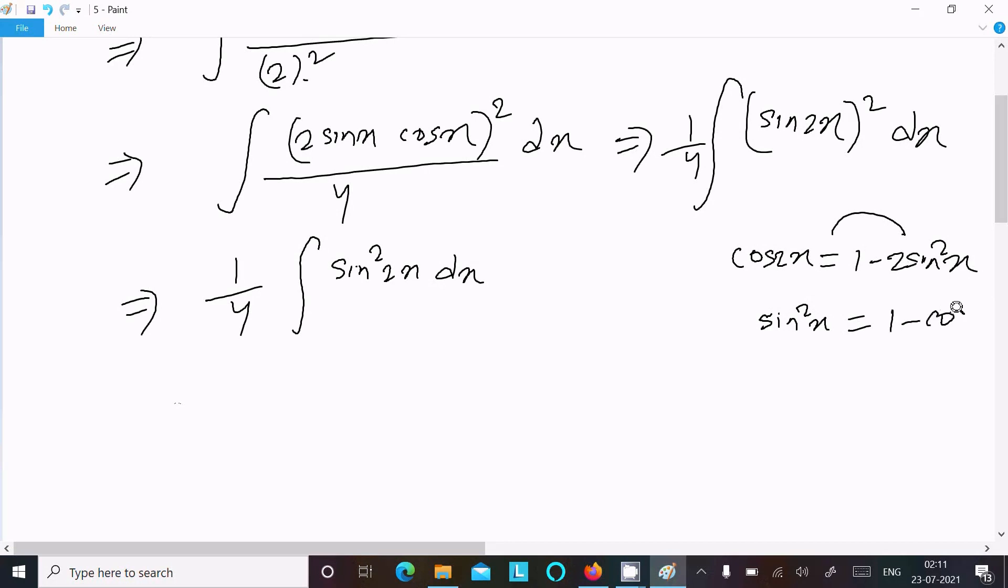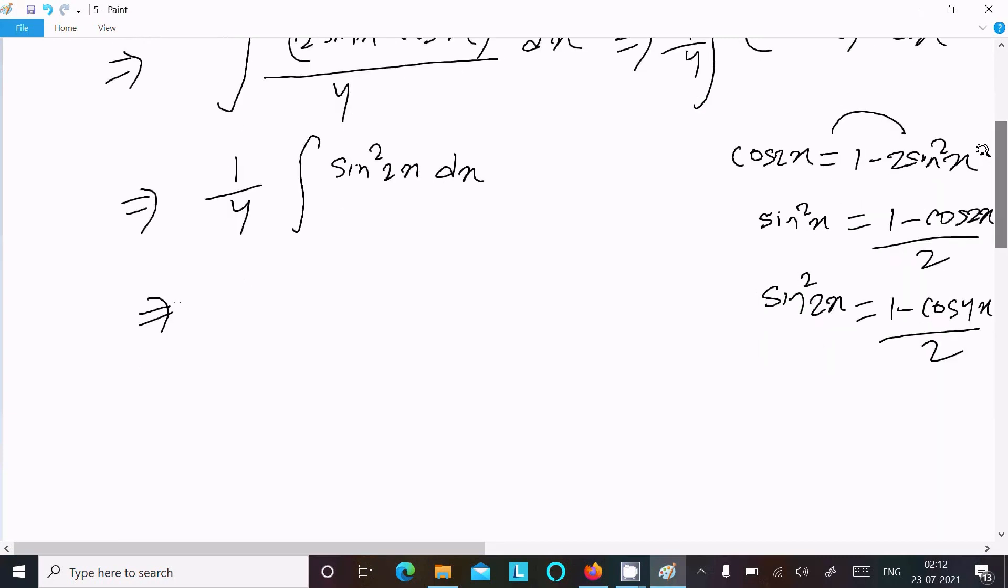So (1 - cos 2x) divided by 2. If we apply this to sin²(2x), we get (1 - cos 4x)/2. Now we can write 1/4 ∫(1 - cos 4x)/2 dx, which equals 1/8.